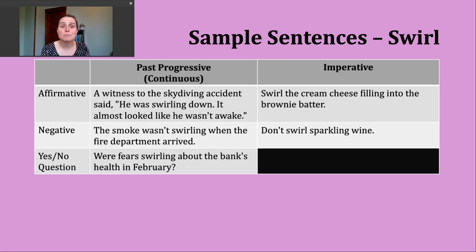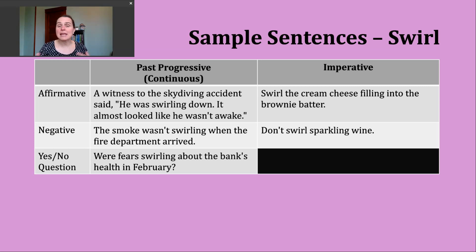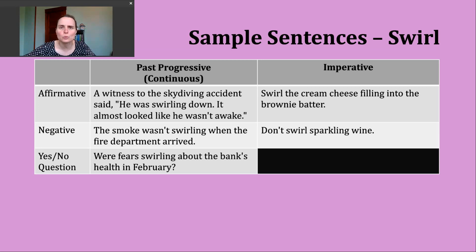To make a negative past progressive sentence, start with your subject, then was or were, then not, then the -ing form of the verb. You might also hear speakers use wasn't or weren't followed by the -ing form — that means the same thing. Example: the smoke wasn't swirling when the fire department arrived. Maybe someone called for help before the fire spread and the smoke began swirling around the structure.